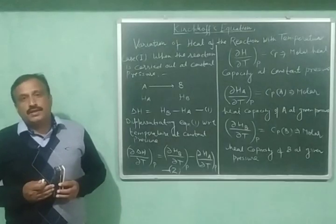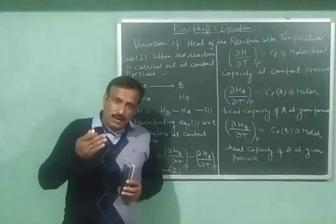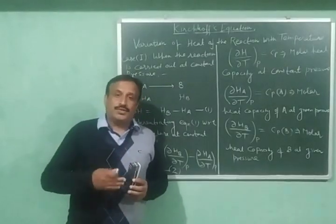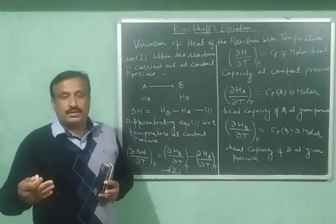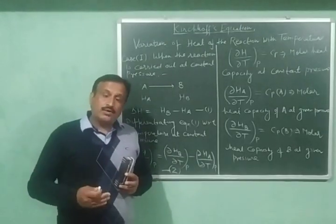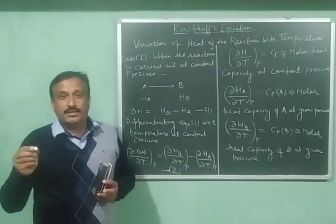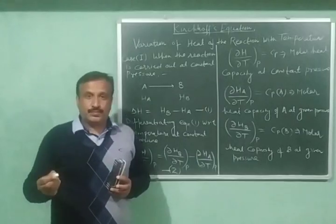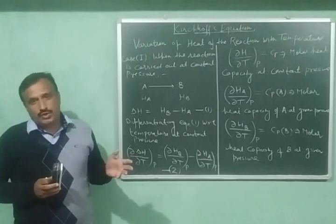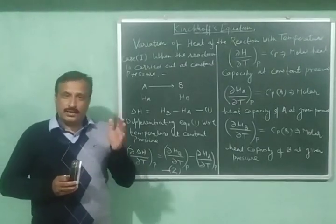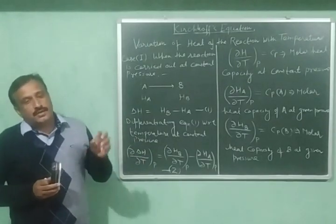The heat of a chemical reaction also depends upon the conditions of pressure and volume. If a reaction is carried out at constant pressure, then the heat of the reaction is given by the change in enthalpy, that is delta H. And if a reaction is carried out at constant volume, then the heat of the reaction is given by the change in internal energy, that is delta U. So we will have two different Kirchhoff's equations: one for reactions at constant pressure and one for reactions at constant volume.